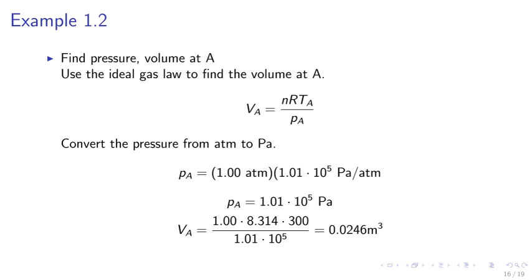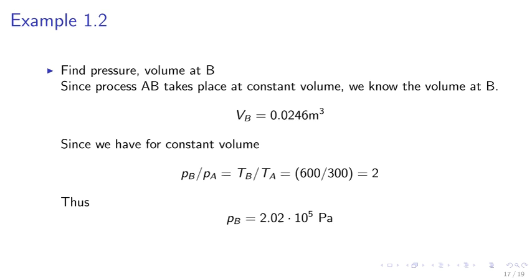Example 1.2. We may find the pressure and the volume at A. We use the ideal gas law to find the volume at A: VA equals NRT over PA. We convert the pressure from atmospheres to Pascals. 1.01 times 10 to the 5th Pascal equals 1 atmosphere. VA equals 0.0246 meters cubed.